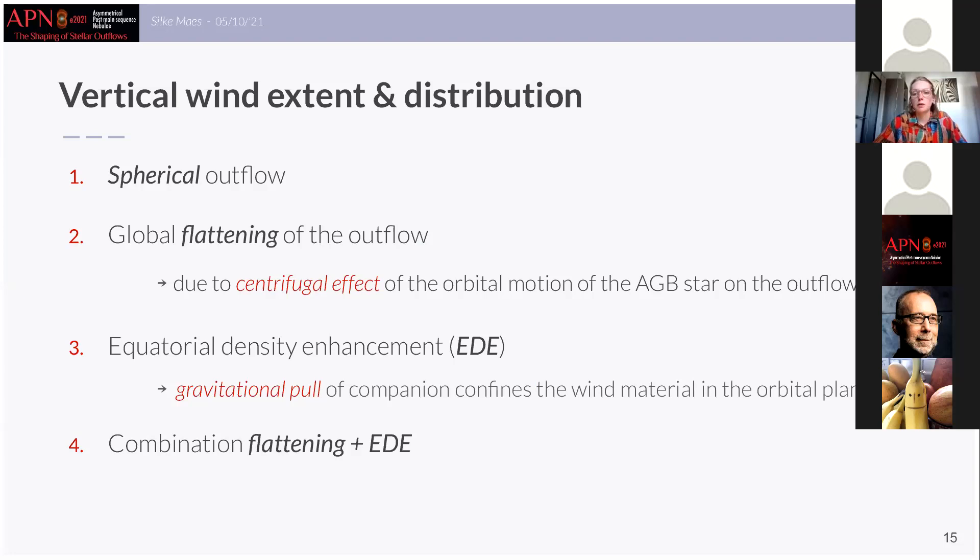So now whether or not a flattening or an EDE is present in the outflow, this depends on the orbital and wind properties of the system. When the interaction between the companion becomes stronger the more likely an EDE is to form, and on the other hand when it's mainly the orbital motion of the HB star that is shaping its outflow, a flattening will result.